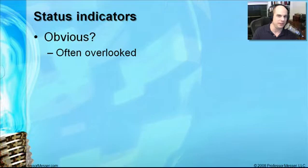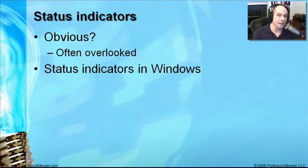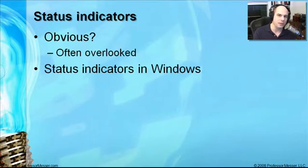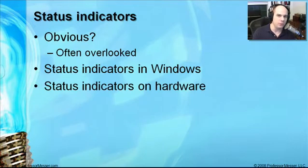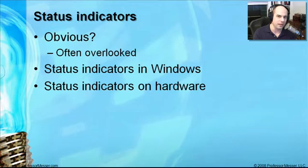Is it plugged in? It's a very simple question, but very often overlooked. There are also status indicators in your Windows desktop — you can configure your taskbar tray to show a small icon that lights up when connectivity is established and flashes during network activity. That can be very useful to confirm you're connected and that traffic is going back and forth. You've also always got lights on the hardware. If you aren't sure what those lights mean, reference the hardware documentation so you know if red means one thing, yellow means another, and green means a third. Check the documentation to know exactly what to expect.